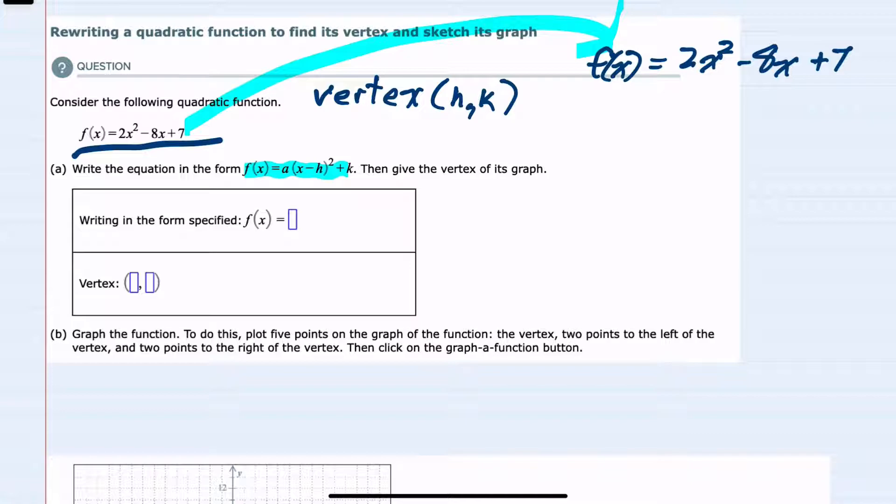To get started, I rewrote the quadratic function we're given. The first thing I notice is that the beginning of the new format is going to have an a factored out and some constant k added to the end. So I'm going to start by looking at the first two terms. I see they have a common 2 that I can factor out, leaving me with x² - 4x inside the parentheses, and then I'm leaving that +7 on the outside.